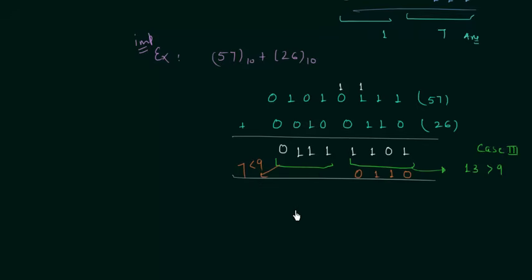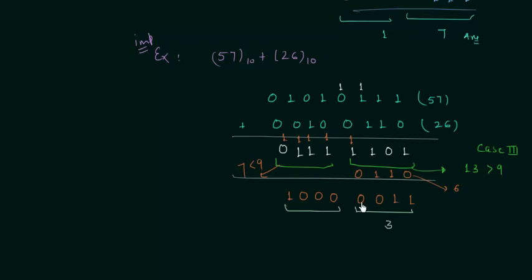After adding 6 to the incorrect group and performing the addition, we make groups of 4 bits. The first group gives us 3 (0011 is 3) and the second group gives us 8, so 83 is the answer. Let's cross-check: 7 plus 6 is 13 with carry equal to 1; 1 plus 5 is 6, plus 2 is 8. So 83 is the correct answer.